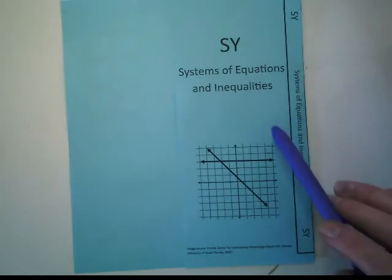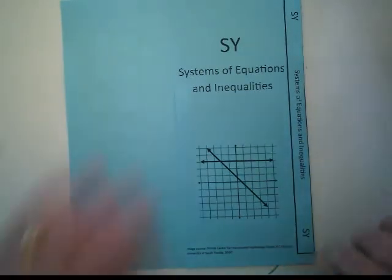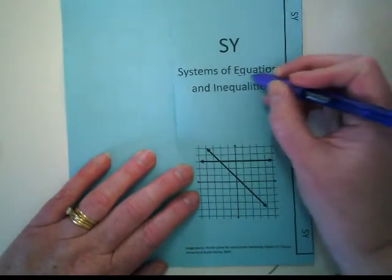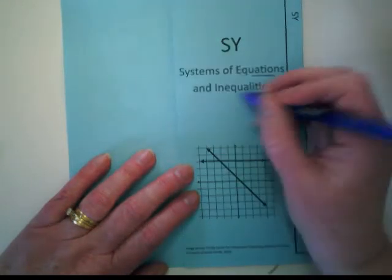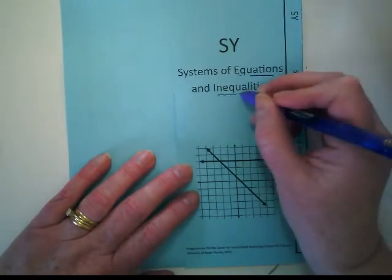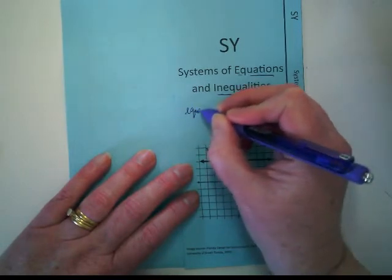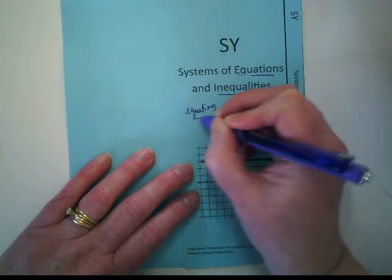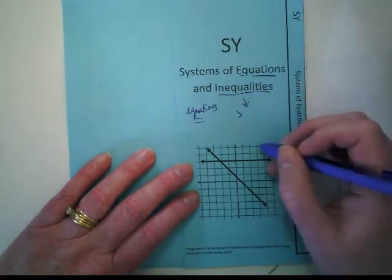Because you're going to want to look back on systems of equations and inequalities later. I want you to think about what you already know about equations and what's different between equations and inequalities. We know with equations, what's our symbol? We have an equal sign. With inequalities we've got a variety of symbols, true.